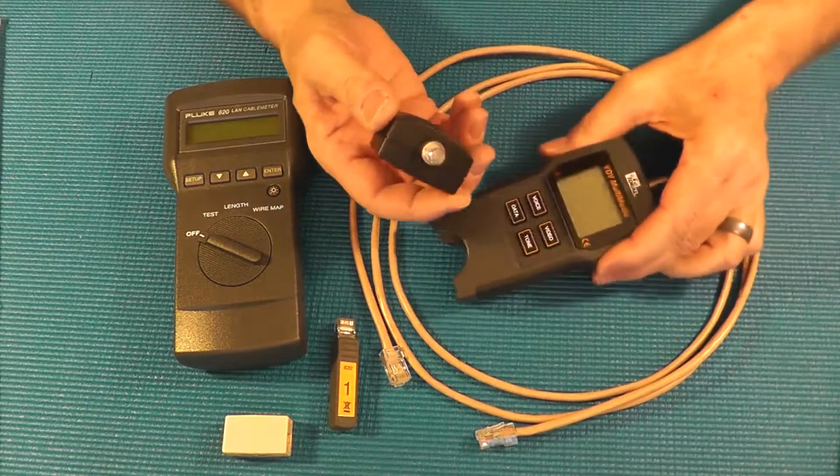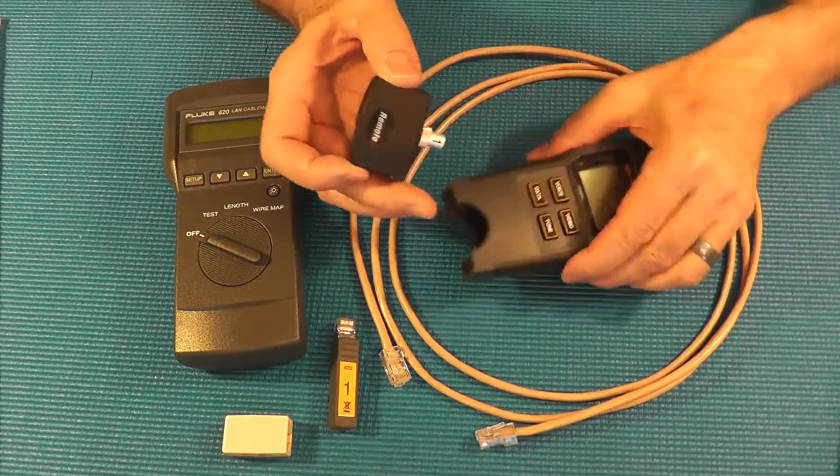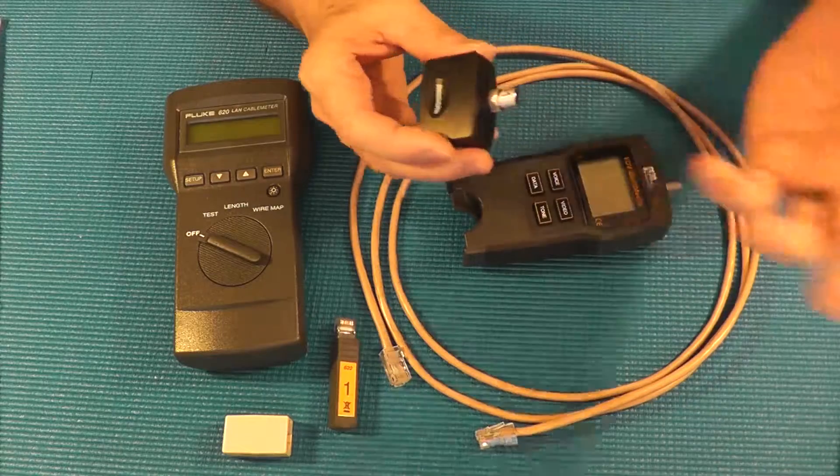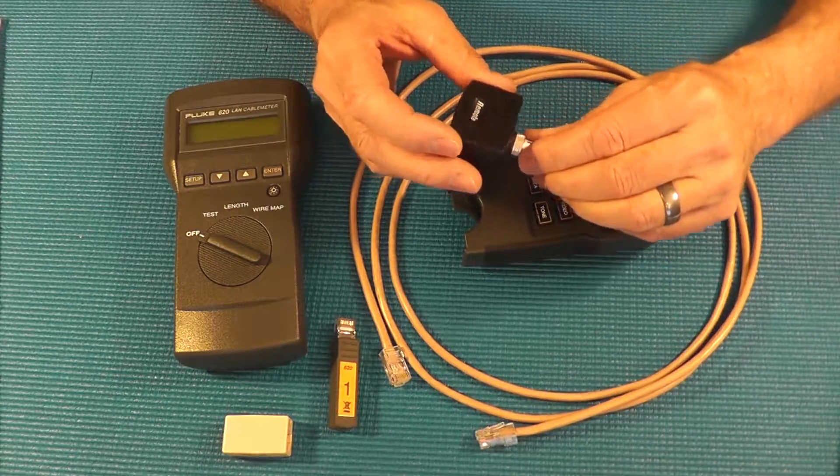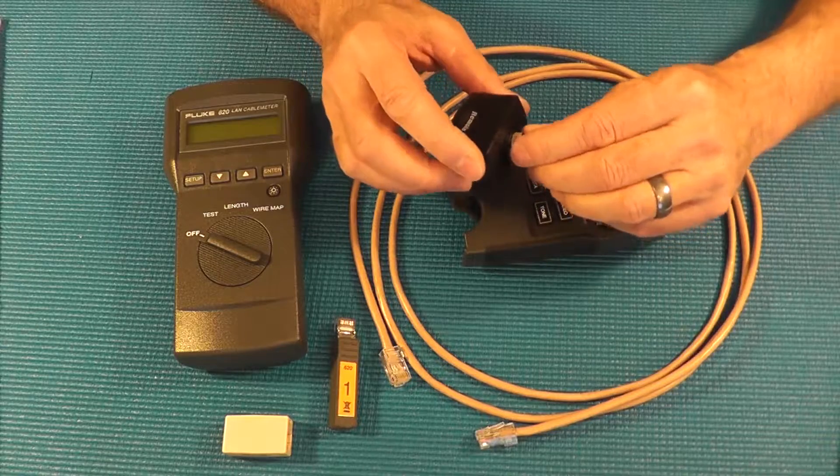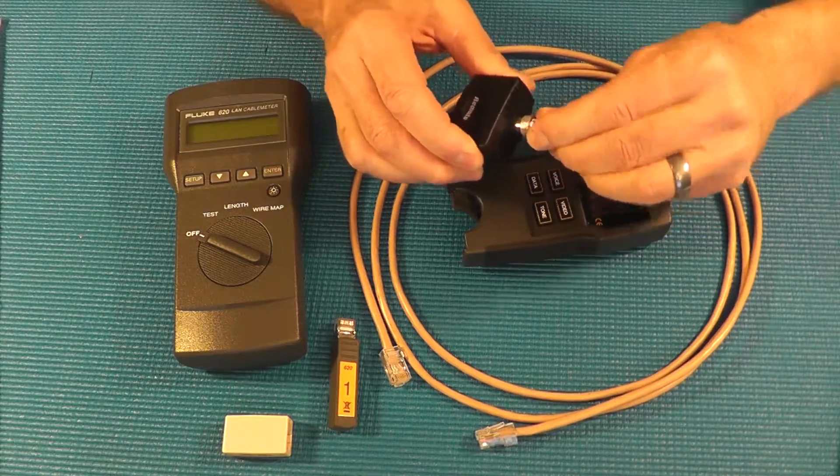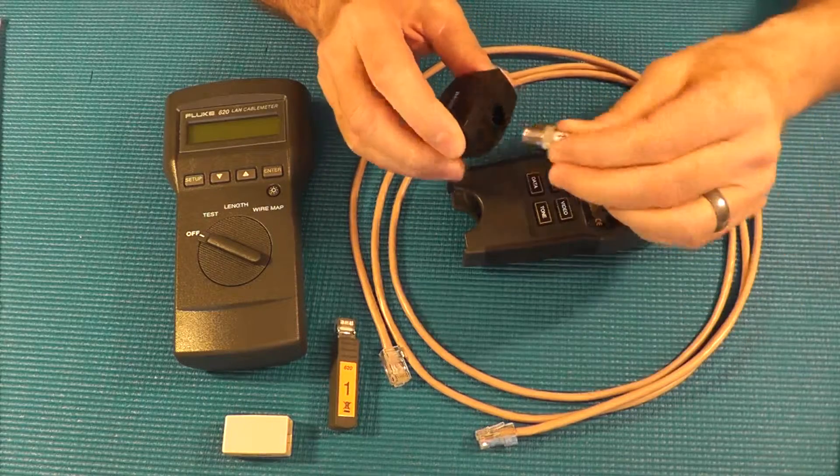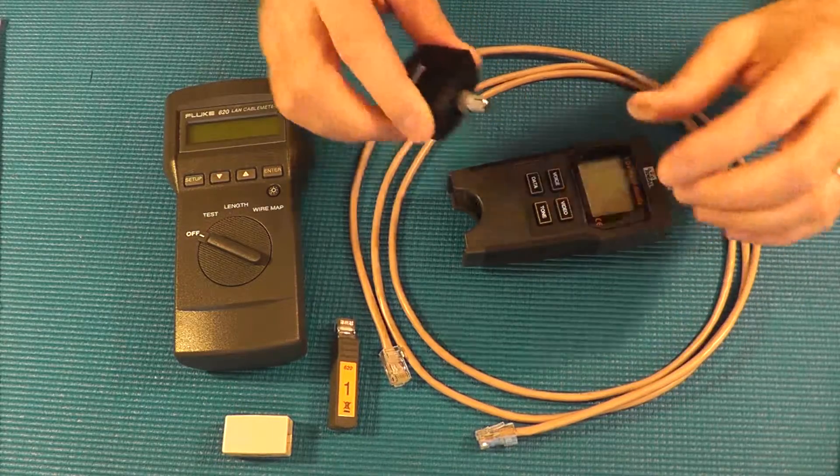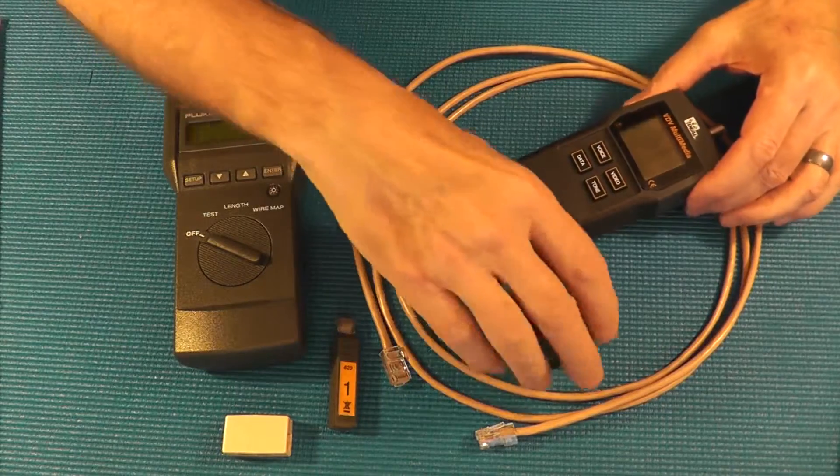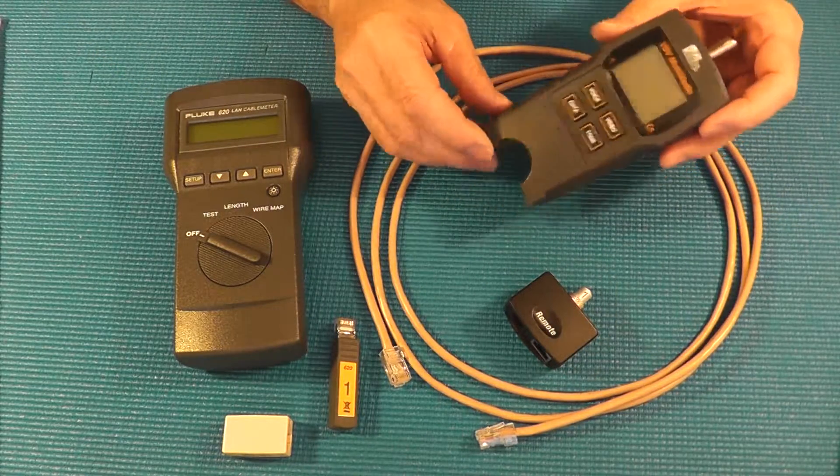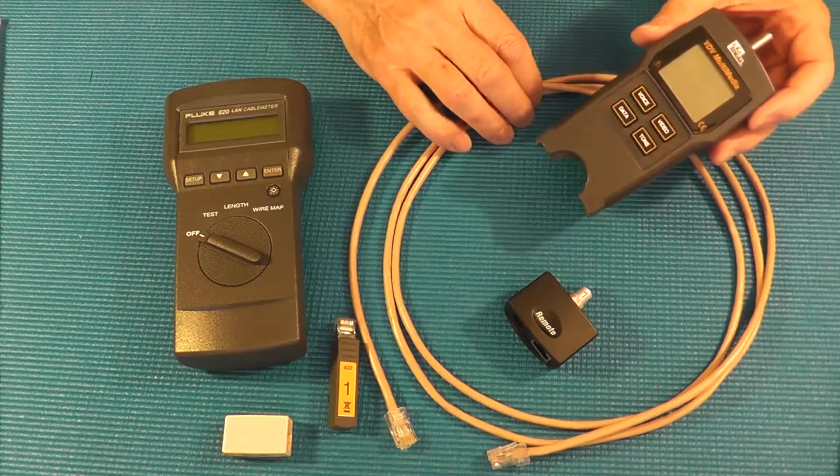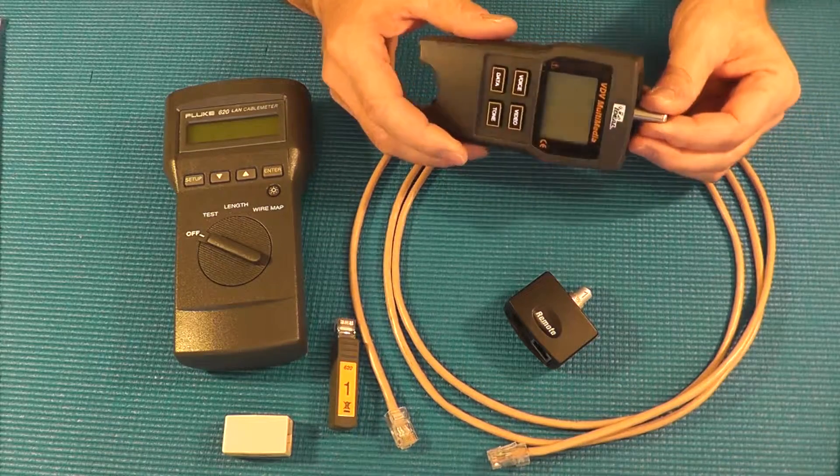You'll notice the remote unit comes out of the bottom if you want to take it out because you want to test some cable in one location and go to another location. There's also the coaxial cable piece for testing coax because being the voice data video tester this thing will test both network media and coaxial cable.